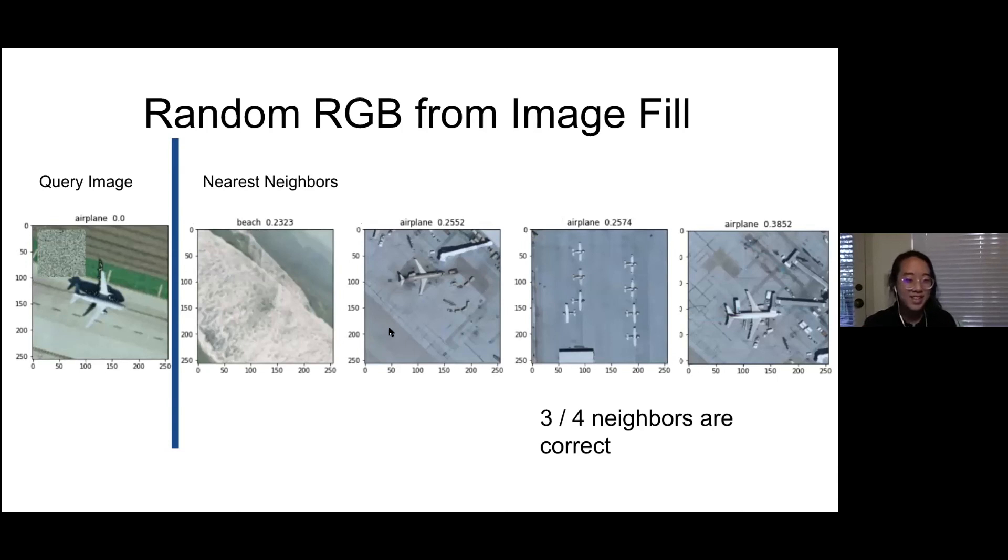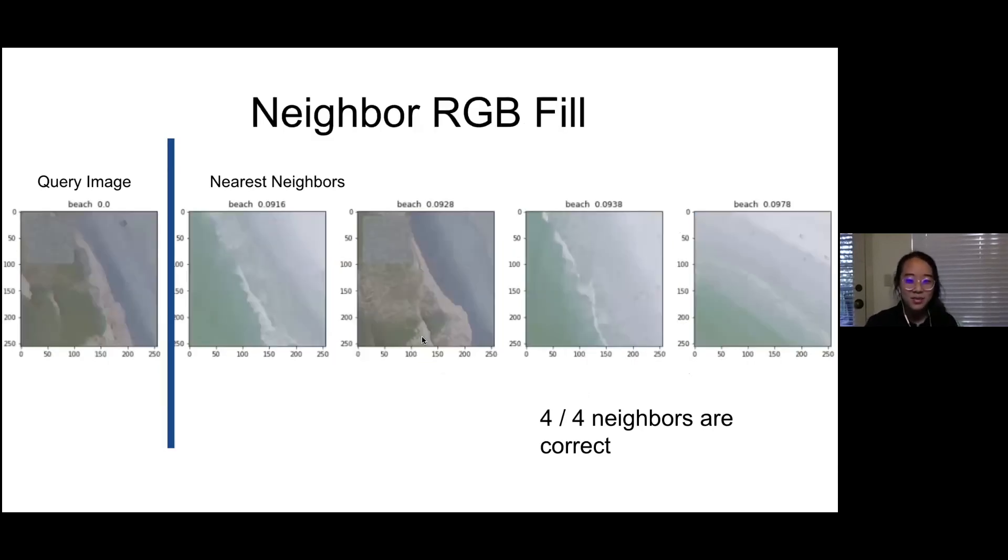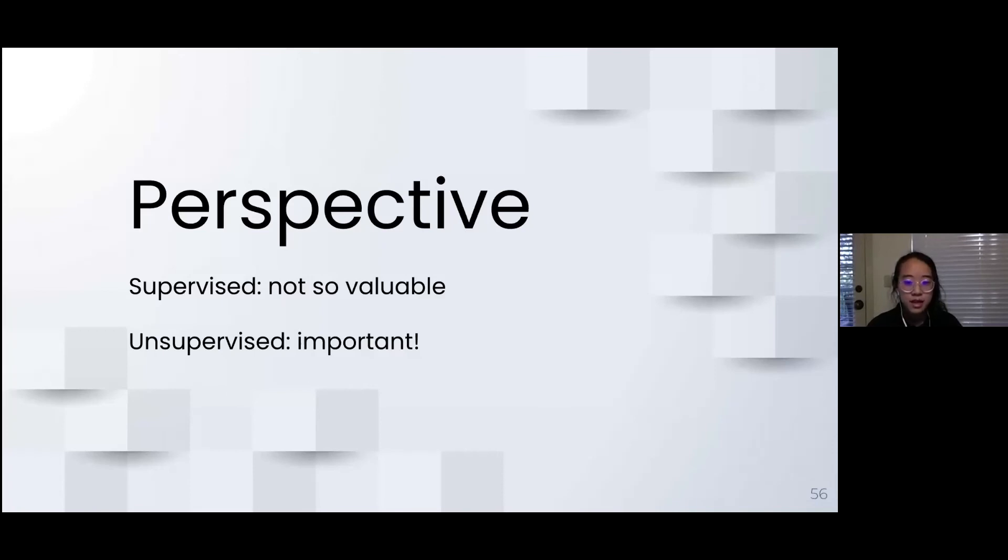And finally, let's look at our final method, filling the swath with nearest pixels. The results are amazing with four out of four neighbors correct. Now, let's zoom out again, so to speak, and put things into the bigger perspective of swath filling's applications in real machine learning.